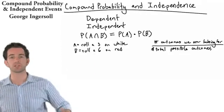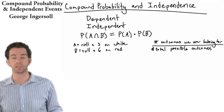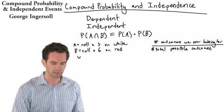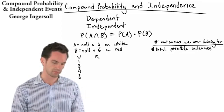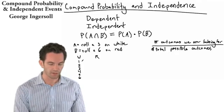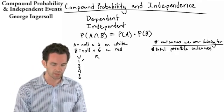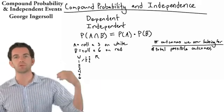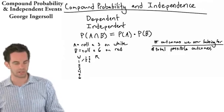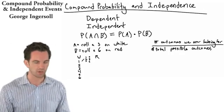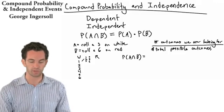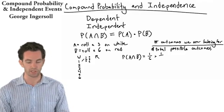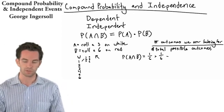We can roll any one of 6 numbers on the first die and any one of 6 numbers on the second die, giving us 36 total possibilities. So the probability of A and B is equal to the probability of rolling a 3 on white — which is 1/6 — times the probability of rolling a 6 on red — which is also 1/6 — equals 1 out of 36.